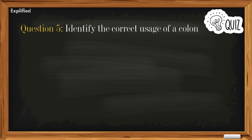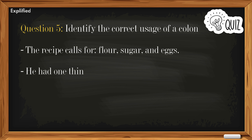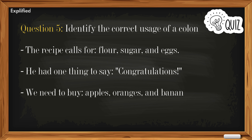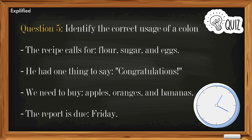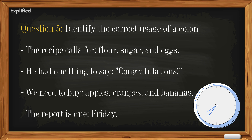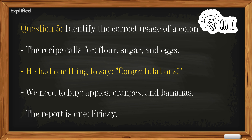Question five: Identify the correct usage of a colon. A) The recipe calls for flour, sugar, and eggs. B) He had one thing to say: congratulations. C) We need to buy apples, oranges, and bananas. D) The report is due Friday. Answer: B) He had one thing to say: congratulations.